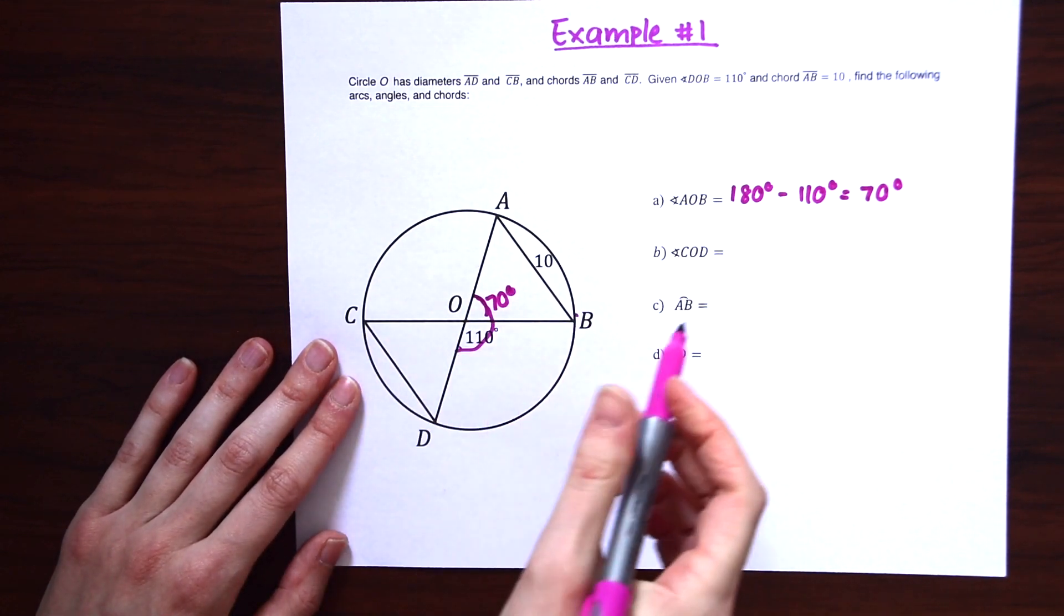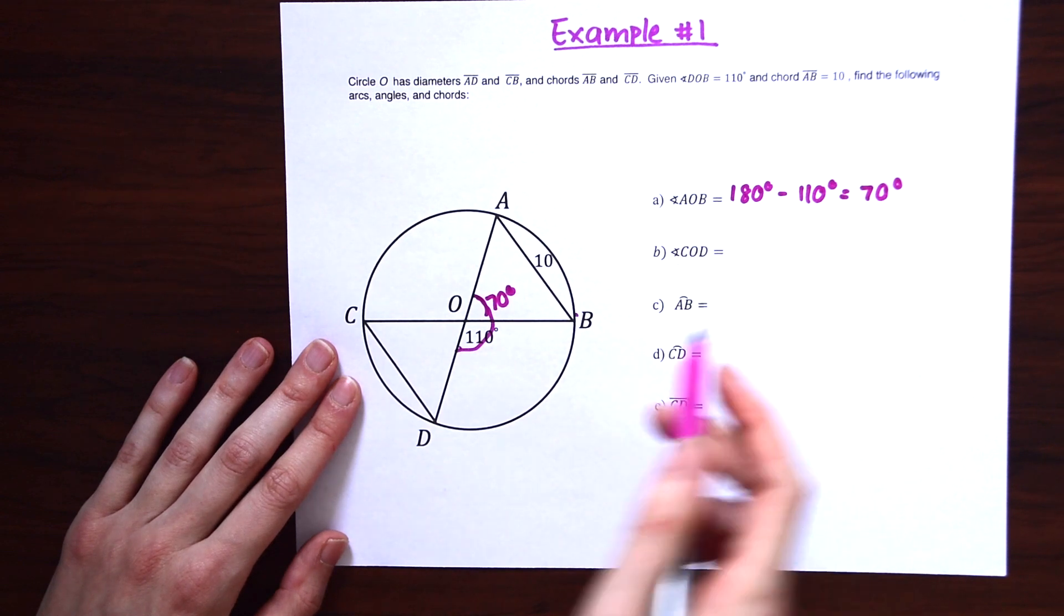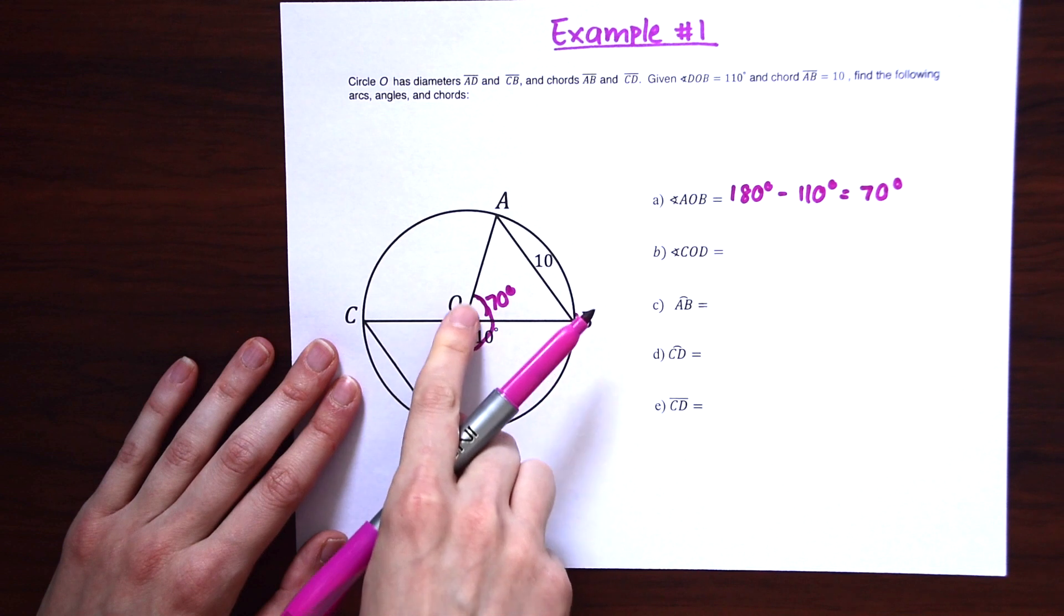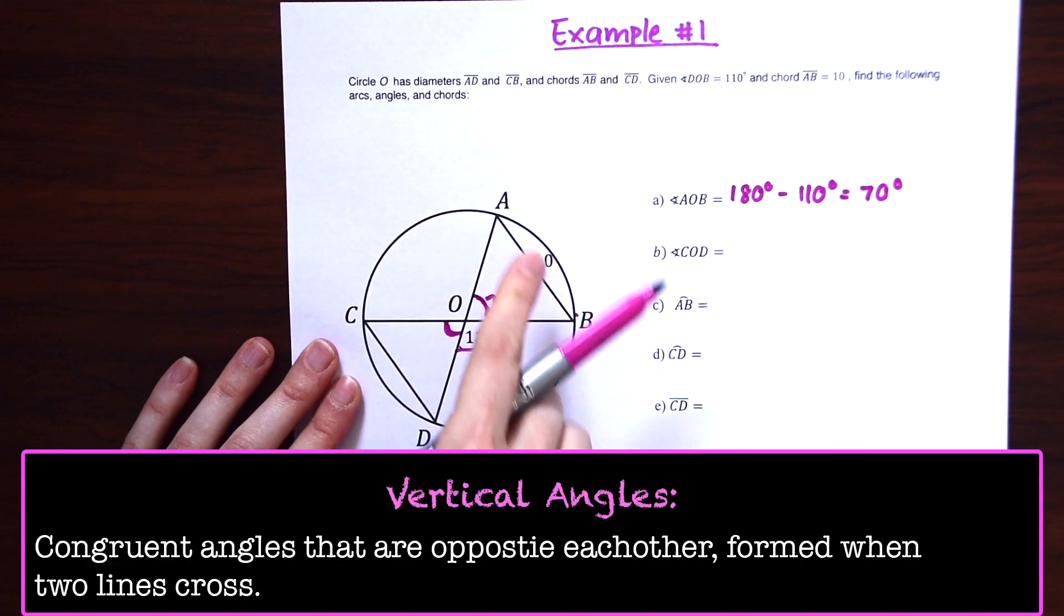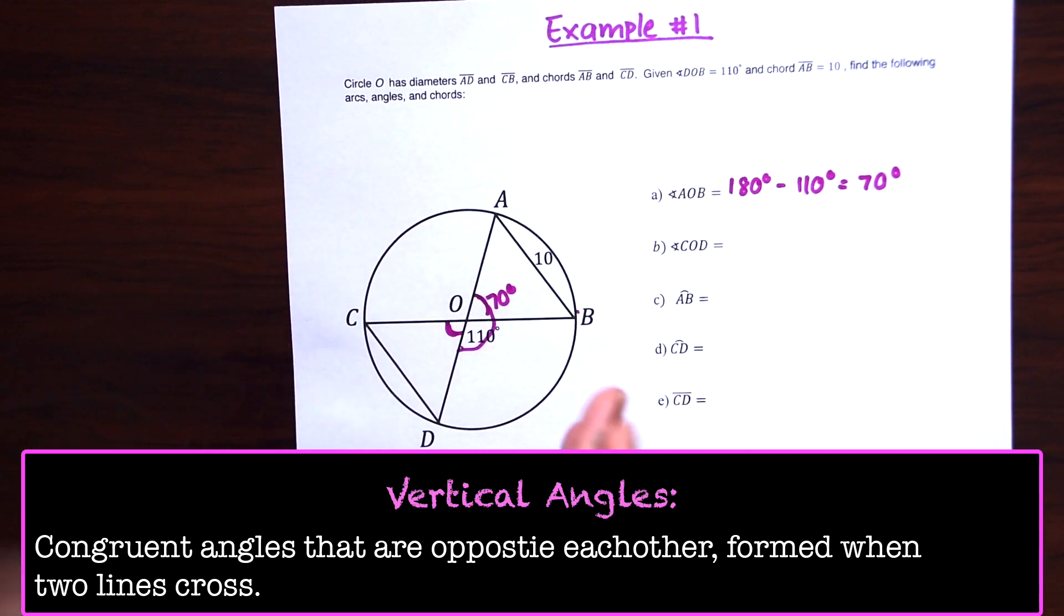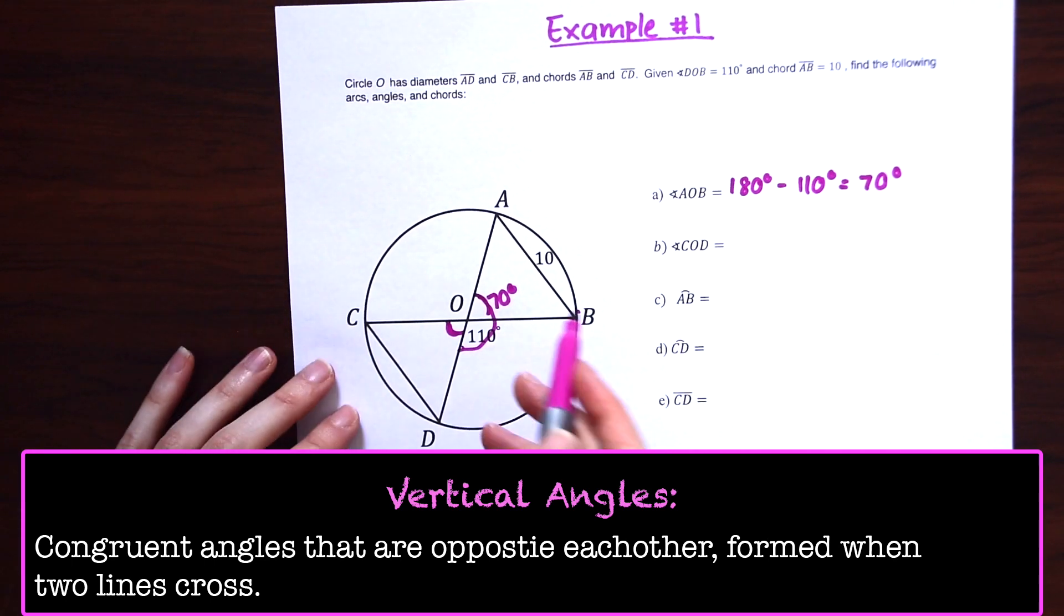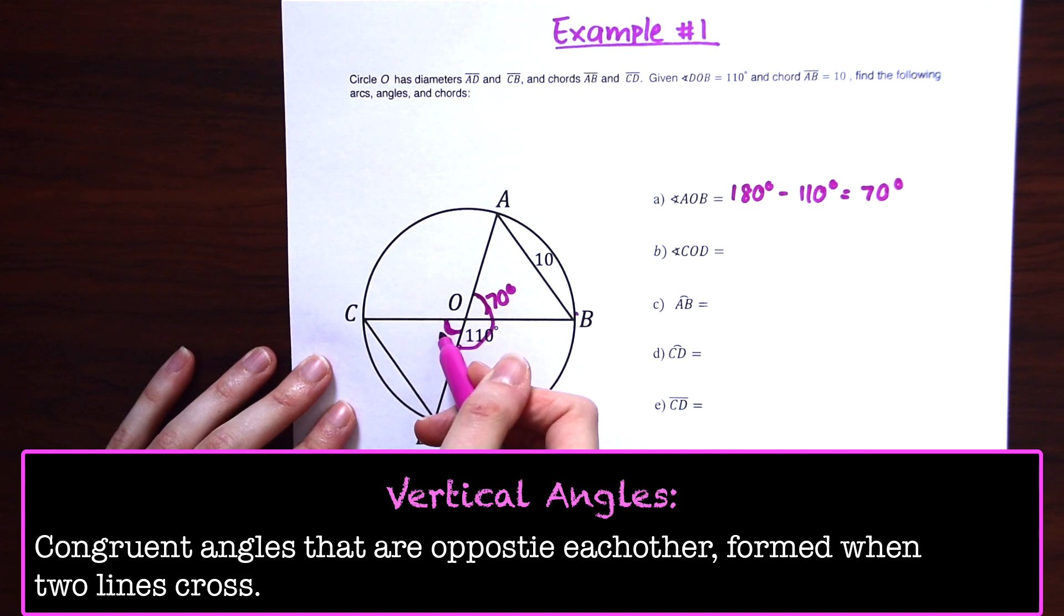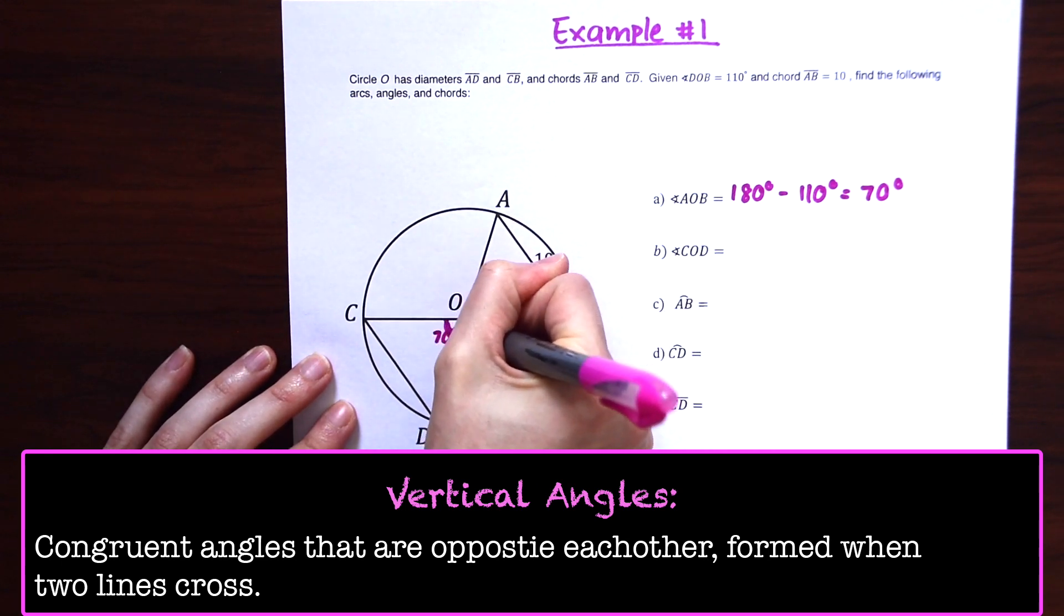Now to find angle COD, or for letter B, this angle over here. Notice that these are vertical angles. We're given that AD and CB are diameters. We know that these are two straight lines intersecting with each other. So whatever value angles over here is going to be over here as well. So this is also 70 degrees.